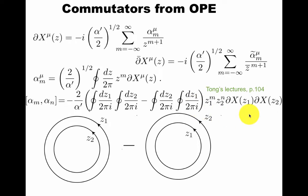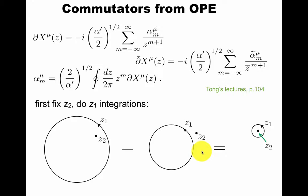How do we do this contour integration? First fix z2. Then you first do the integration of z1 outside, and then you do the integration of z1 inside. So you haven't done z2 yet. If you think about it, this is going the other way with a minus sign. So you can draw it inside here. You can do deformation to just get to this part.